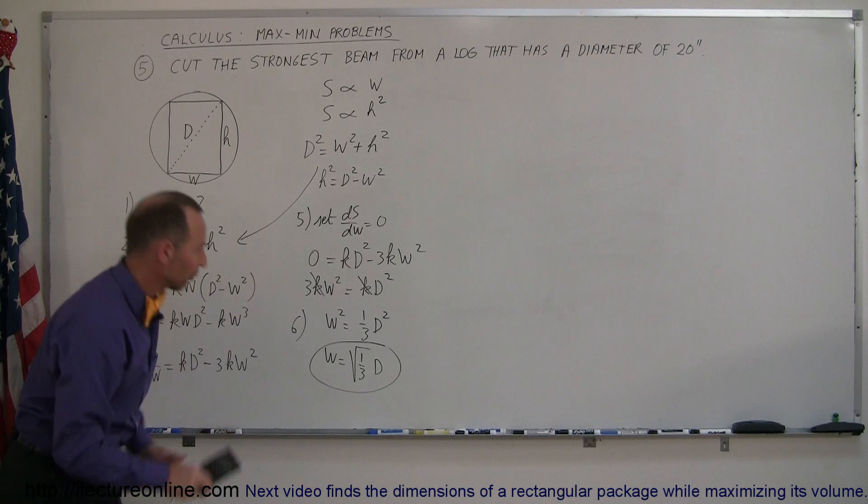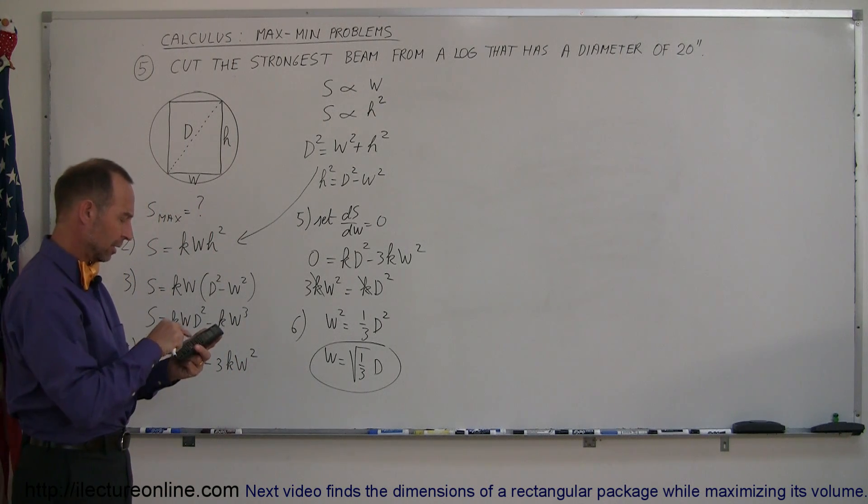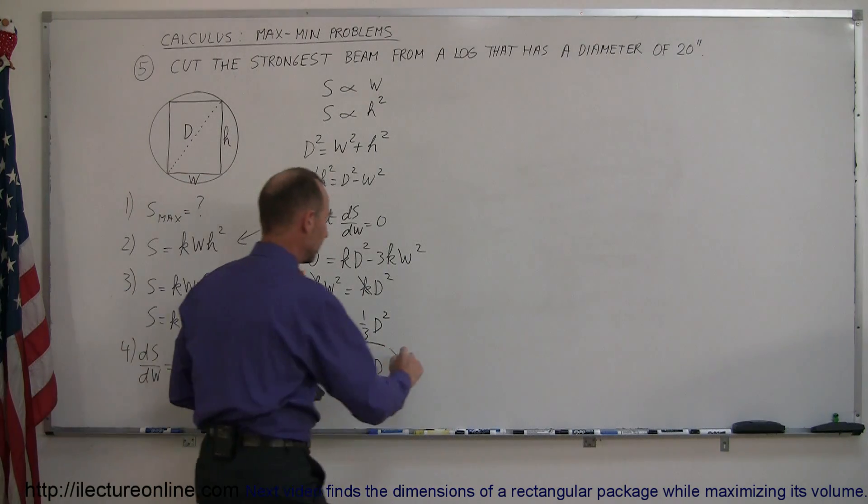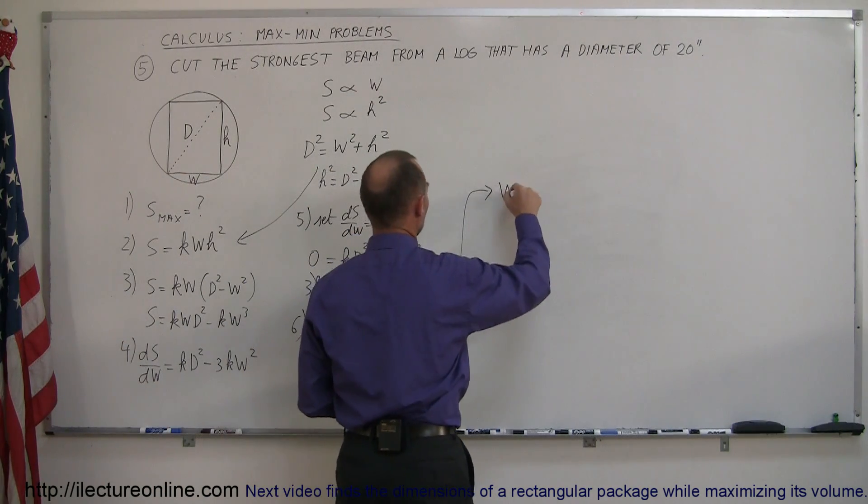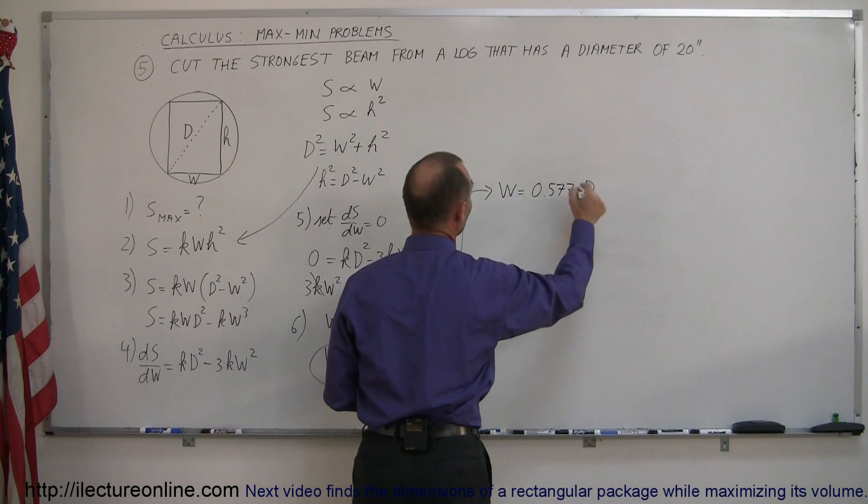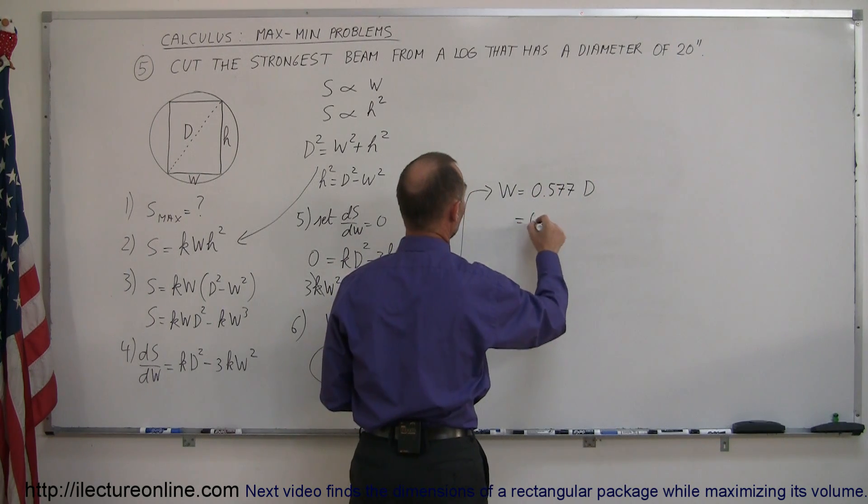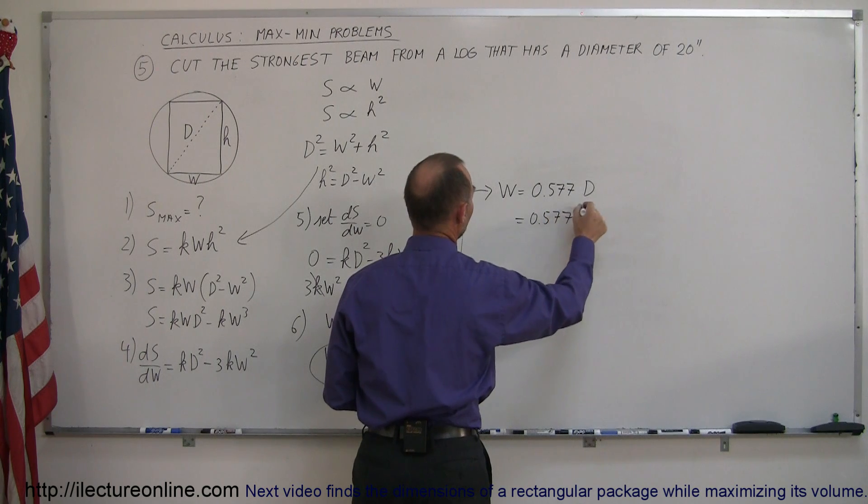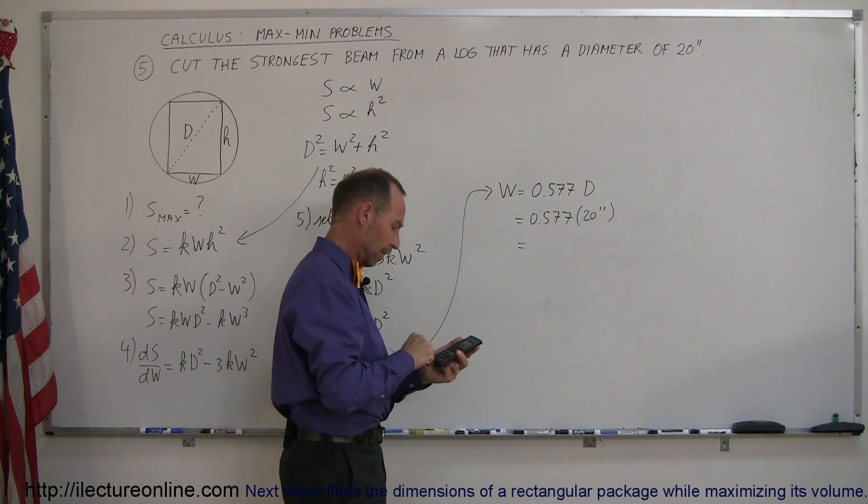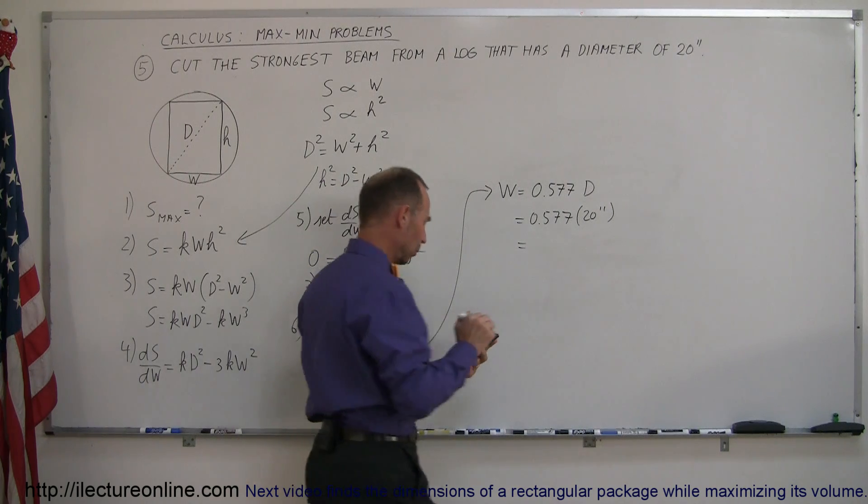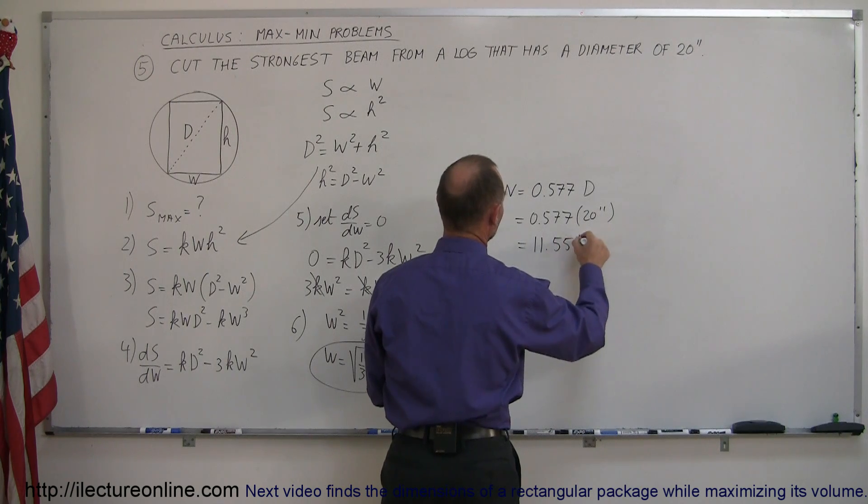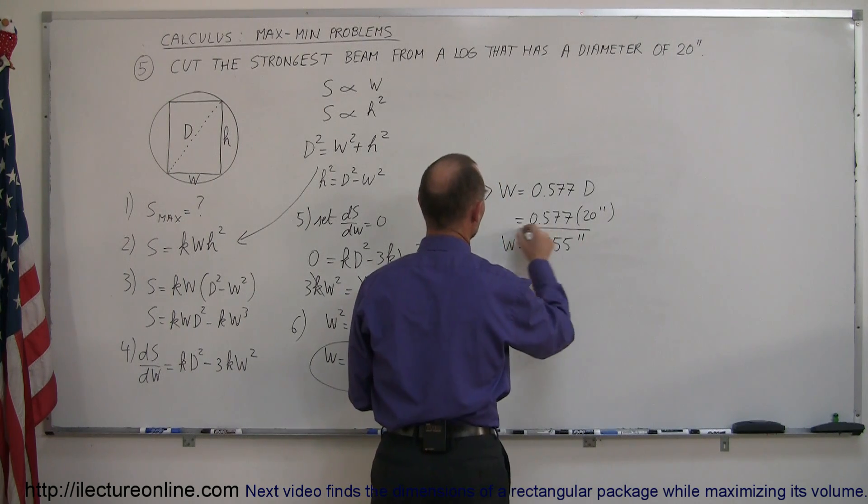Now what is the square root of one-third? 1 divided by 3, take the square root, and it's 0.577. So that means that the width should be equal to 0.577 times the diameter, and since the diameter is 20 inches, that's 0.577 times 20 inches, and that would be 11.5 or 11.55 inches if you want to have it like that. So w is equal to this.